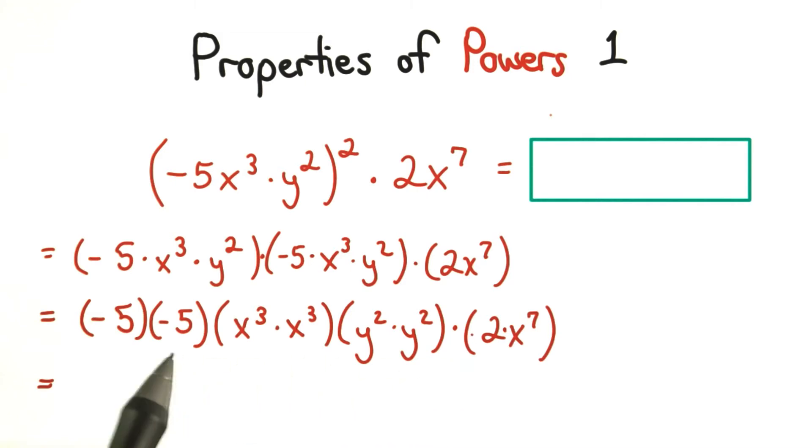Now that I'm here, I can multiply my numbers together and my bases together. Negative 5 times negative 5 is positive 25 times 2 is 50.